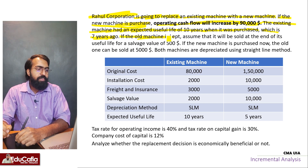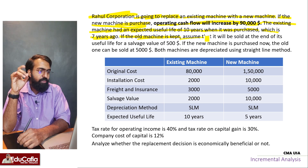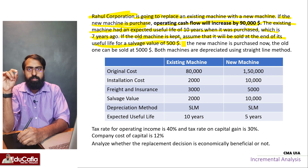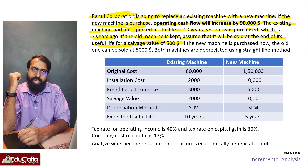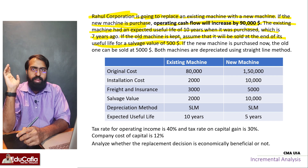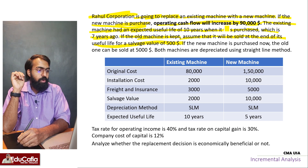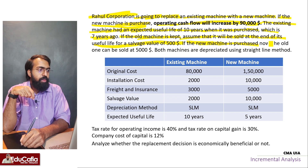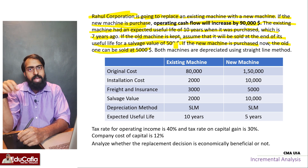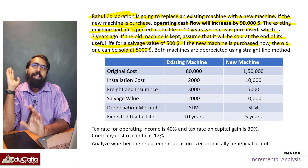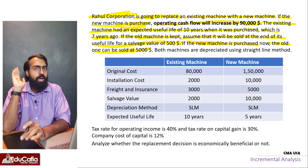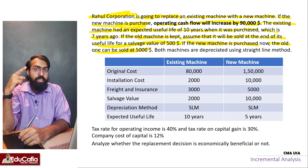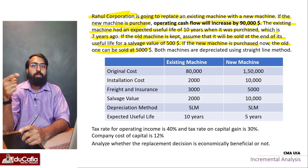The existing machine had an expected useful life of 10 years when it was purchased, but it is now 7 years old. If the old machine is kept, assume that it will be sold at the end of its useful life for a salvage value of $500. If the new machine is purchased right now, the old can be sold for $5,000. This $5,000 is the opportunity cost - if you don't buy the new machine, you give up this $5,000.